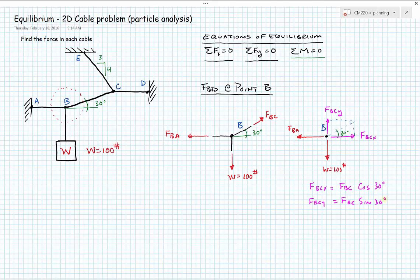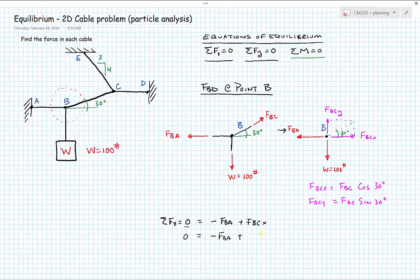Applying the sum of forces in the x-direction equals zero, respecting signs: minus FBA plus FBCx equals zero. Expanding: 0 equals minus FBA plus FBC cosine of 30 degrees. We have two unknowns so we can't solve directly, but we get the relationship: FBA equals FBC cosine of 30 degrees.